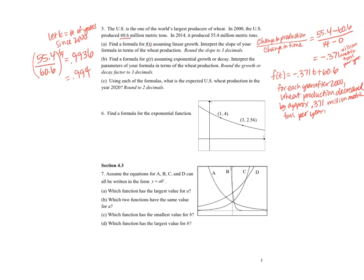And so then I can say G of T equals 60.6 times 0.994 to the T.